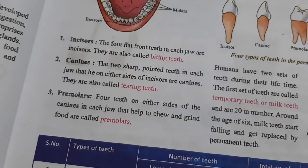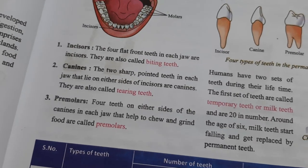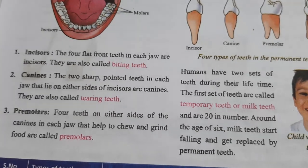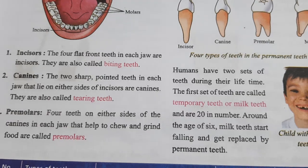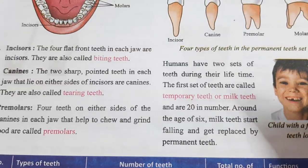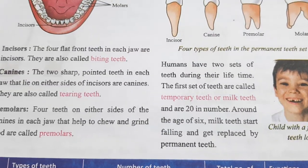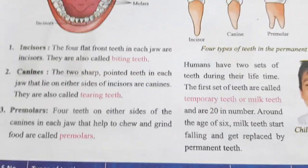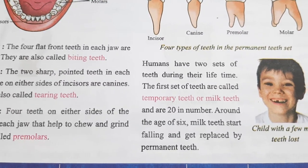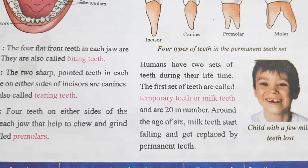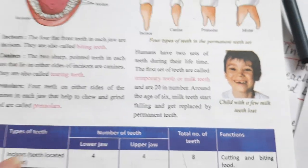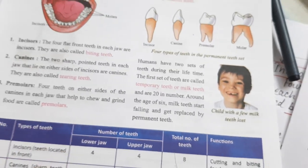The first set of teeth are called temporary teeth or milk teeth and are 20 in number. Around the age of six, milk teeth start falling out and get replaced by permanent teeth.